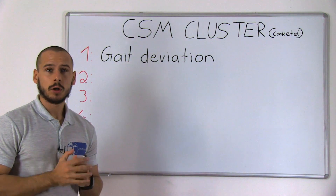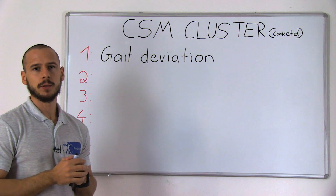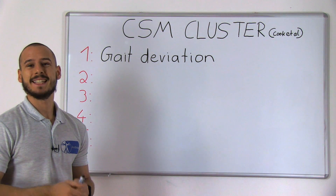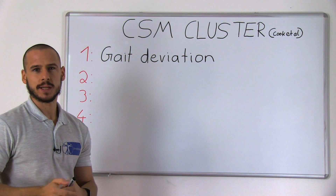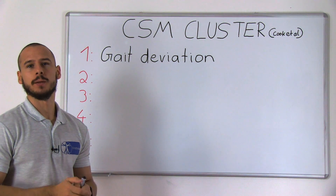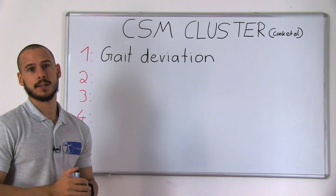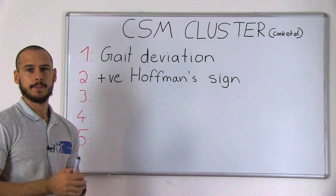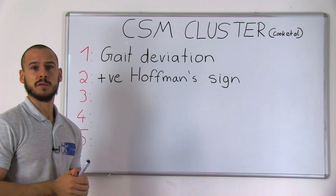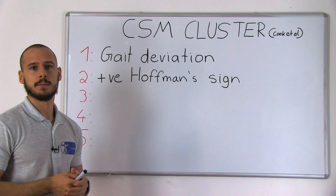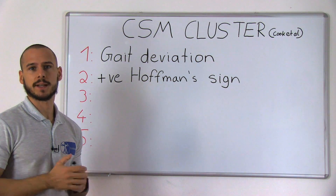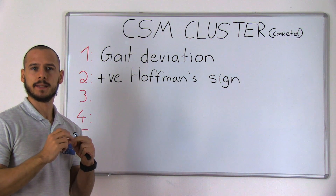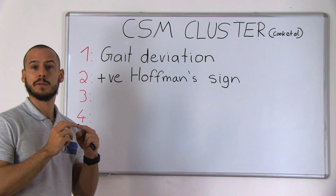The five tests or patient characteristics included in the rule are the following. Number one is gait deviation, which shows as abnormally wide-based gait, ataxia, or spastic gait. Number two is a positive Hoffman's test or Hoffman's sign, which is characterized by a reflex contraction of the thumb and index finger when flipping the distal part of the middle finger.